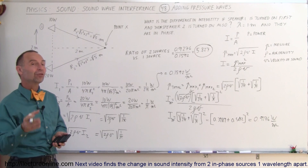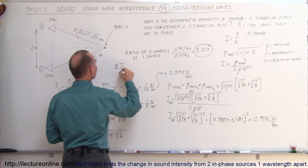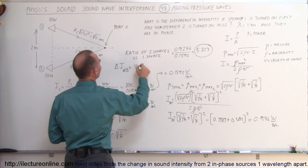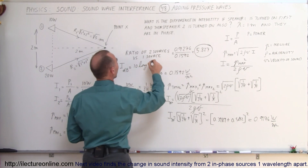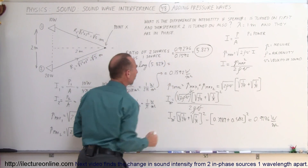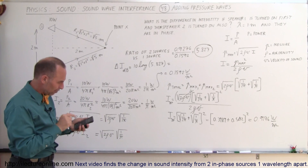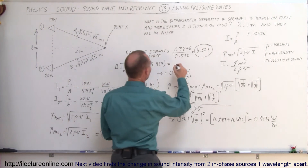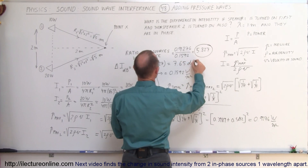Now we convert that ratio to decibels. The difference in intensity in decibels equals 10 times the log of the ratio of 5.827. Taking that log and multiplying by 10 gives us a difference of 7.65 decibels.